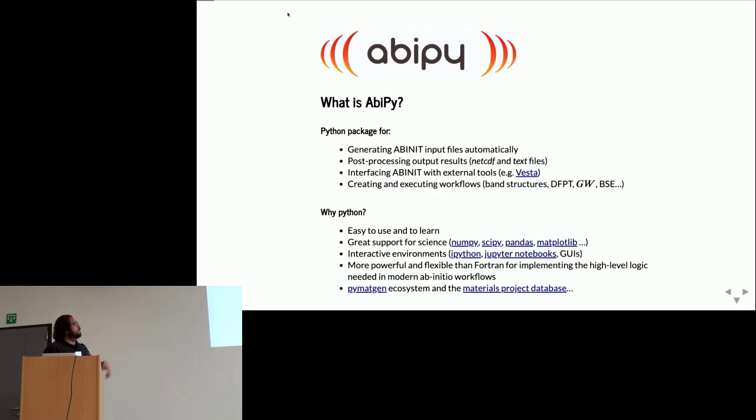AbiPy is a Python project designed to analyze and post-process ABINIT calculations, generate input files automatically, and connect ABINIT with external tools. There's also a significant part that we use to automate calculations, not just at the output level, but also for debugging, benchmarking, and testing new implementations done in Fortran.